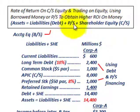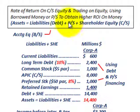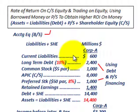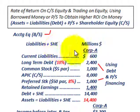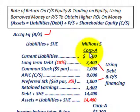Preferred stock is being separated out here, treating it more as debt. We're going to be looking at the liabilities and shareholders' equity of Corporation A, in millions of dollars. These are just average amounts for the year.